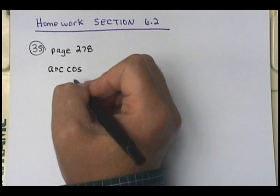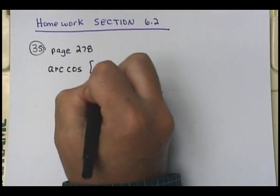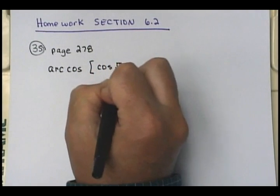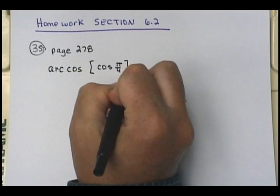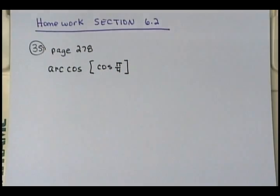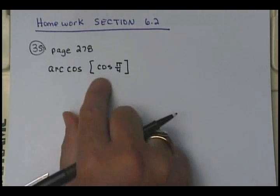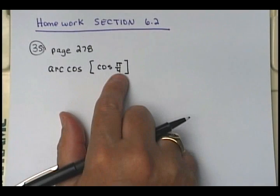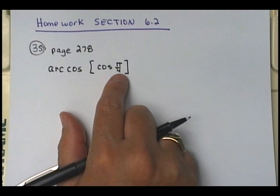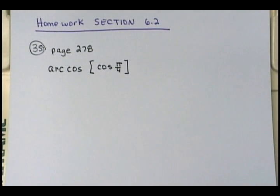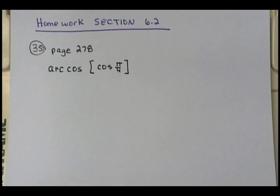We've got the arc cosine of cosine at pi fourths. Now, there is a property where if you've got the arc cosine of cosine, it would just be that value — but you have to be very careful, because sometimes things may be outside the restriction for the inverse. The inverse of cosine only goes from zero to pi.